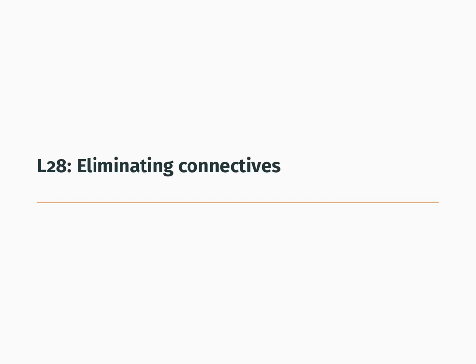In the last lecture, we proved a logical equivalence which said that p implies q is logically equivalent to not p or q. If you find this equivalence tricky to remember, then one way to do it is to remember that the only way to make p implies q false is for p to be true but q to be false. And that's also true of the right-hand side: in order for not p or q to be false, both not p and q must be false, so p must be true and q must be false. That's the same condition for making p implies q false.